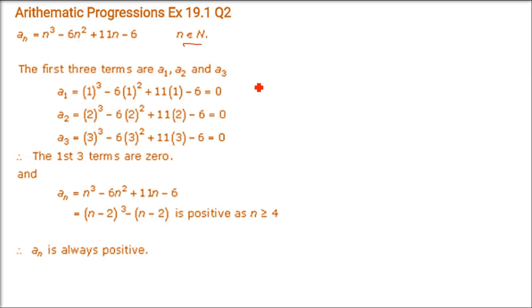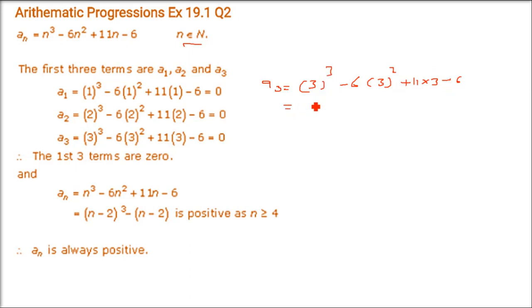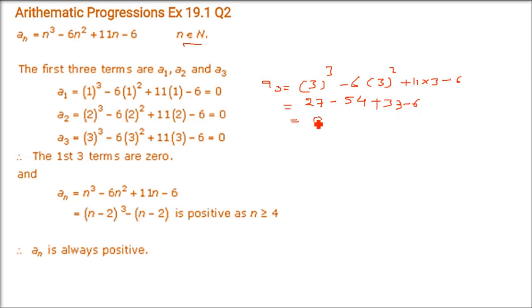The first and second terms we can easily find. Let us find a₃: put n = 3. We get 3³ - 6(3²) + 11(3) - 6 = 27 - 54 + 33 - 6 = 0. So a₁, a₂, a₃ are all 0.